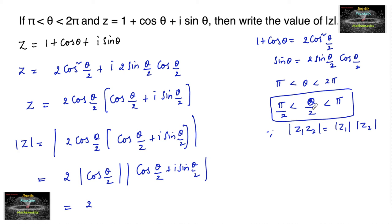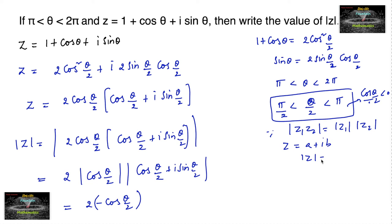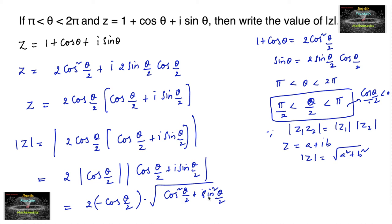Since θ/2 belongs to the second quadrant, cos(θ/2) is negative. So mod of cos(θ/2) equals minus cos(θ/2). For the modulus of cos(θ/2) plus i sin(θ/2): if z equals a plus ib then mod z equals root over a² plus b², so we get root over cos²(θ/2) plus sin²(θ/2), which equals 1 by the Pythagorean identity.